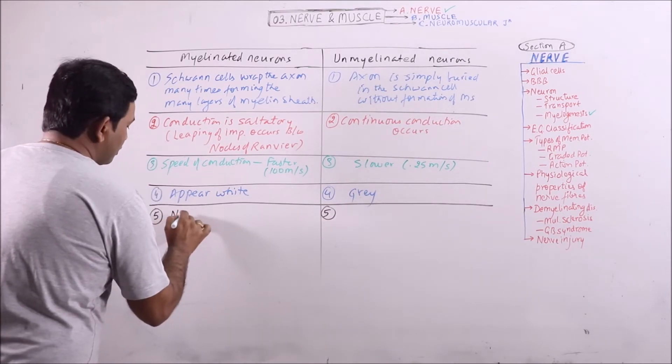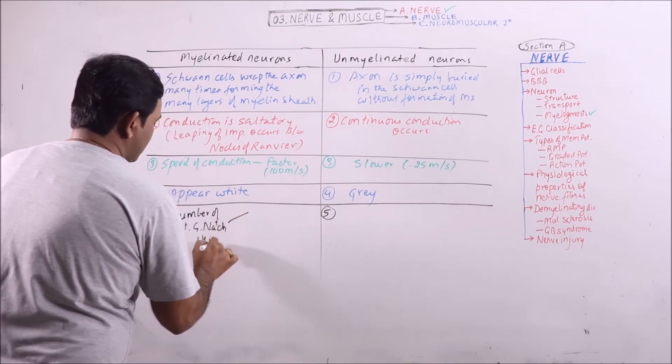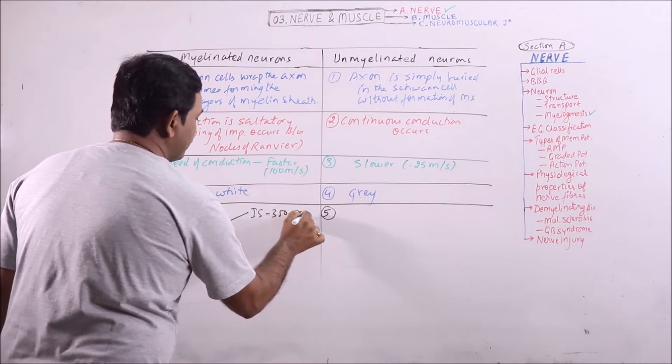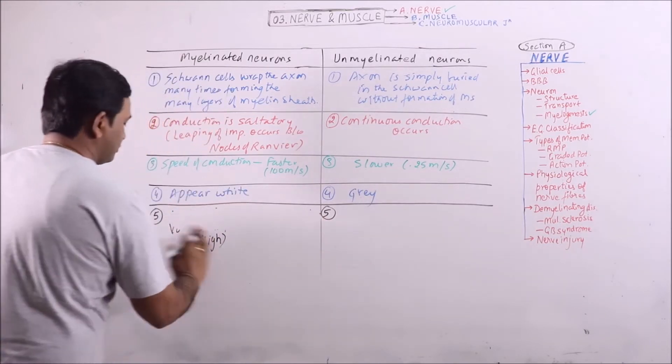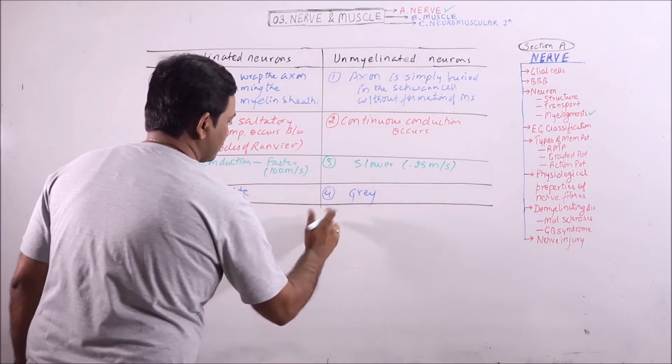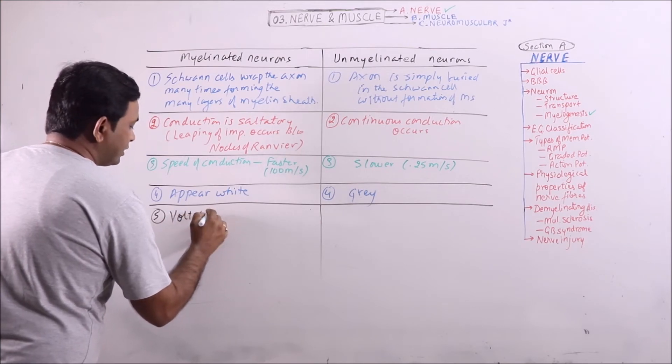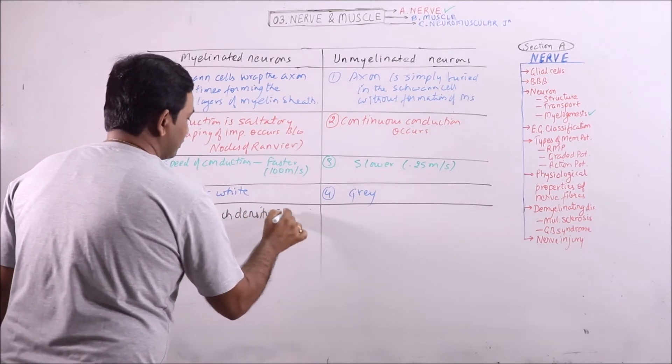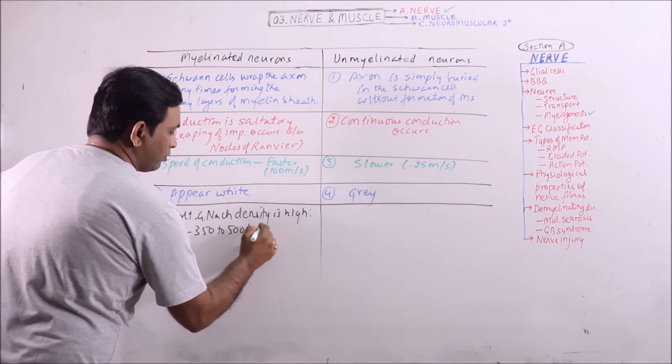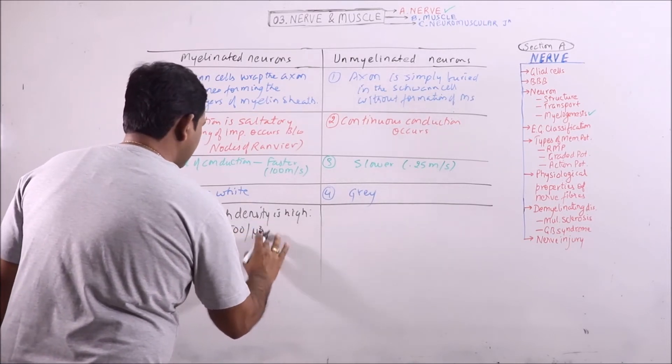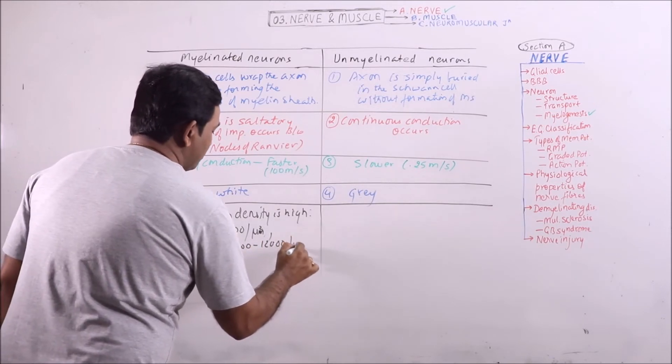Then, number of voltage-gated sodium channels. Voltage-gated sodium channel density is high. For example, in initial segment, it is 350 to 500 per micron square, and at node of Ranvier, it may be between 2,000 to 12,000 per micron square.